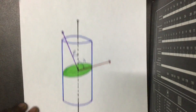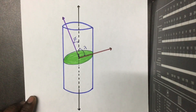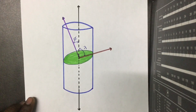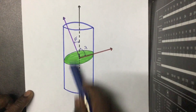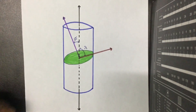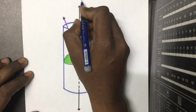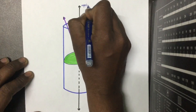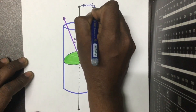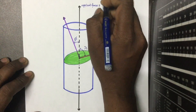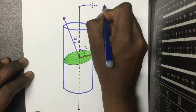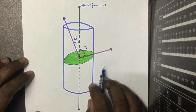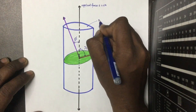First, I would like to derive the expression for critical resolved shear stress. This is our cylindrical specimen, and this is the direction of the applied force F. The force F equals sigma times A, where sigma is the stress and A is the cross-sectional area of the specimen.